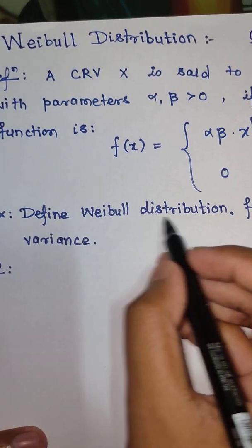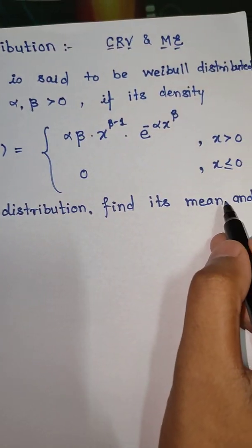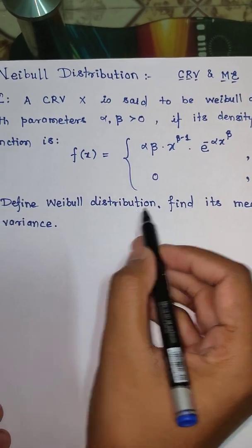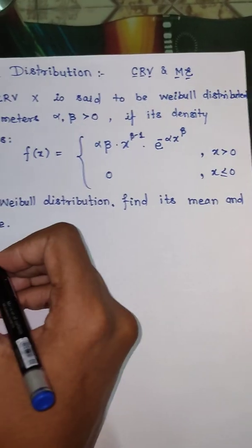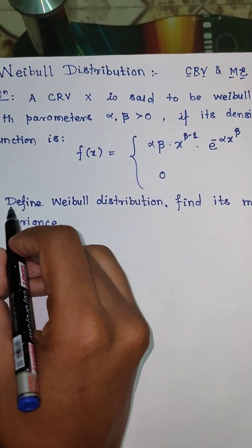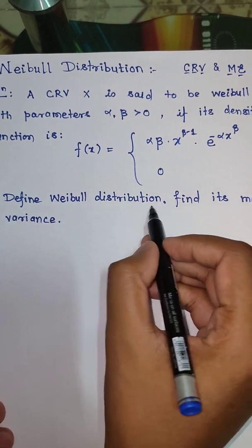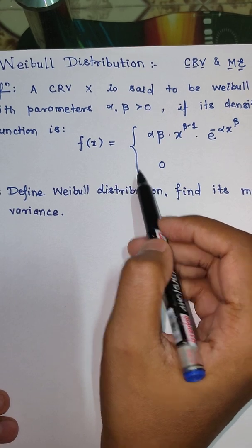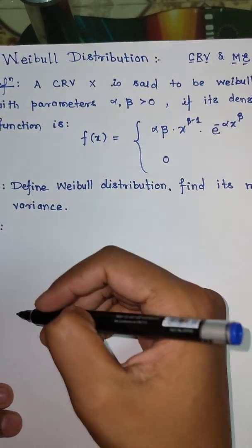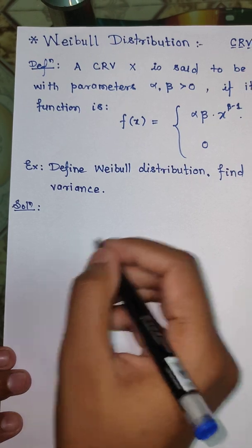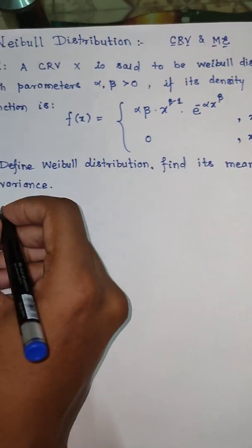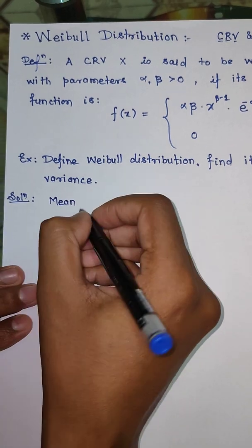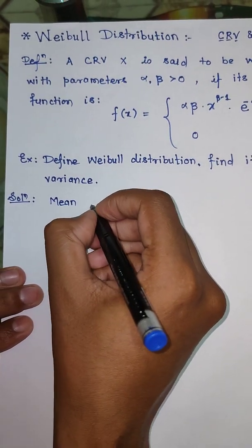This type of example will be asked in the examination. The example says: define Weibull distribution and find its mean and variance. Whether or not it is stated in the examination, you have to write down the definition of Weibull distribution first, then start with the mean.